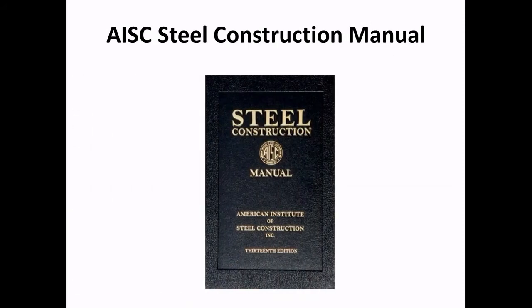The steel construction manual is tough to navigate because it is so long — there's tons of information in there and it's impossible to effectively use without tabbing. Make sure you know how to use all the charts that go into design. Also remember the steel manual is as much a textbook as it is a reference. The sections in the back have step-by-step instructions for compression, tension, and flexural design, so be sure to tab those and know how to use them.